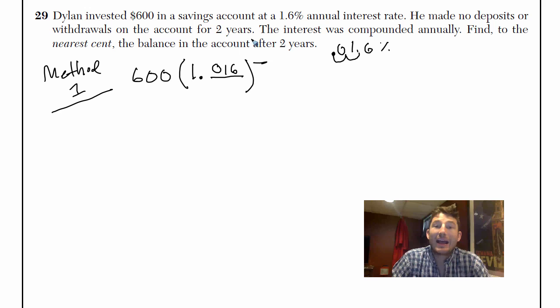And the exponent is just how many years you want to compound that number. So this is two years.